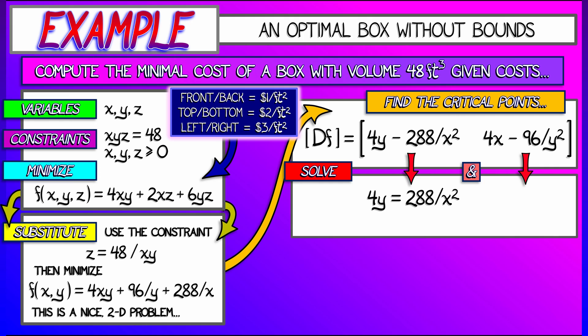That gives us two equations, two unknowns. 4Y equals 288 divided by X squared, 4X equals 96 divided by Y squared. If you substitute in one equation into the other and solve, you get X equals 6, Y equals 2.